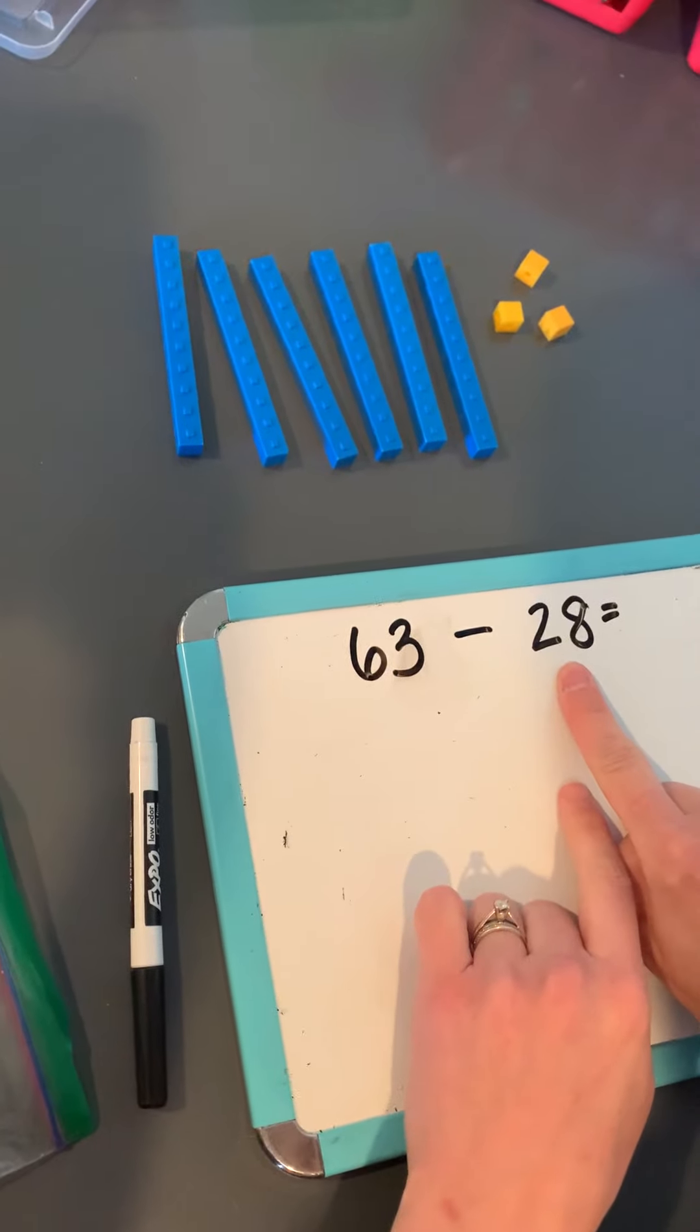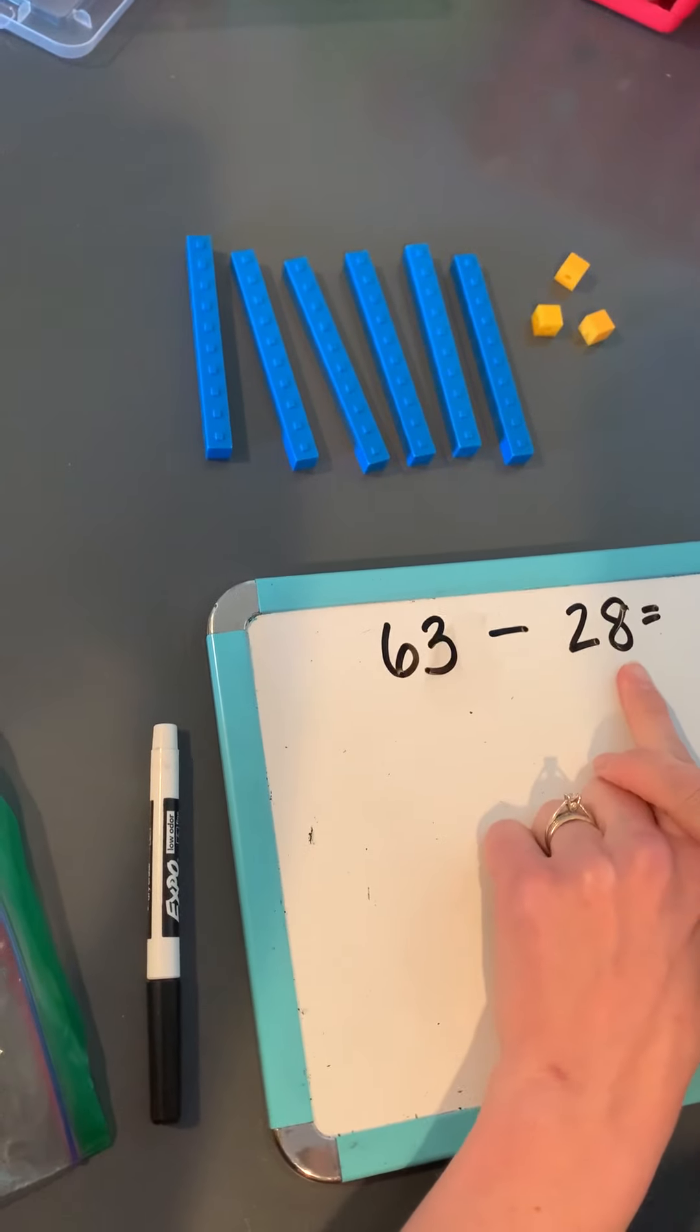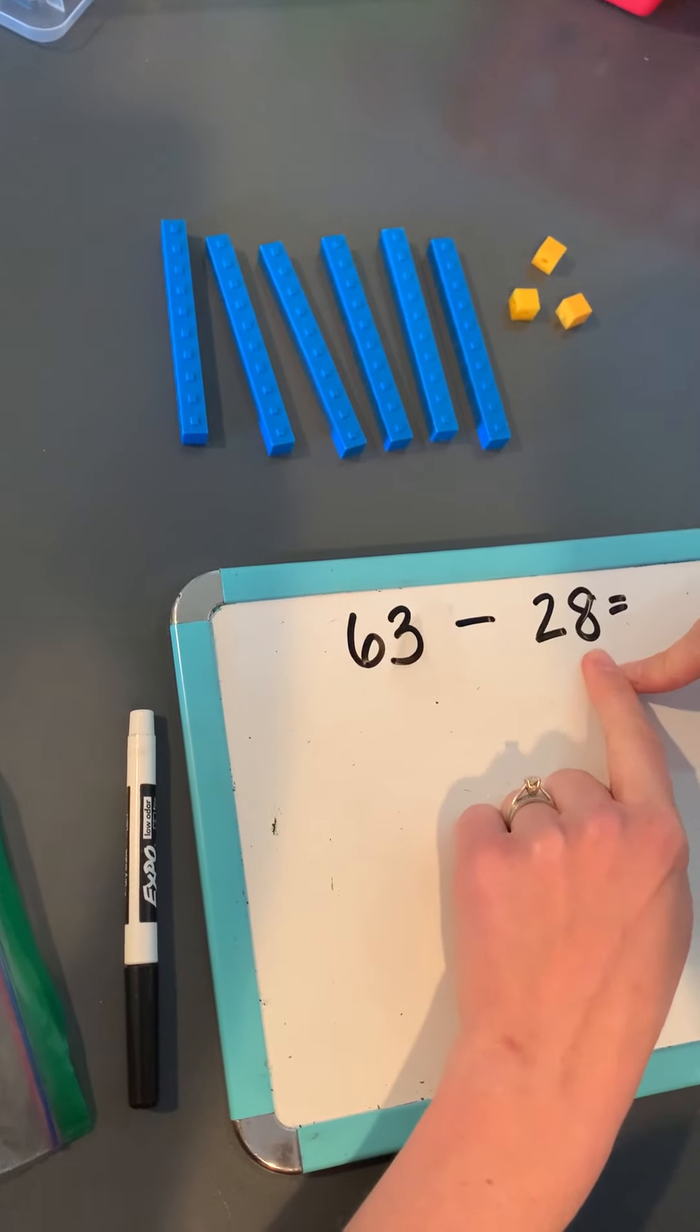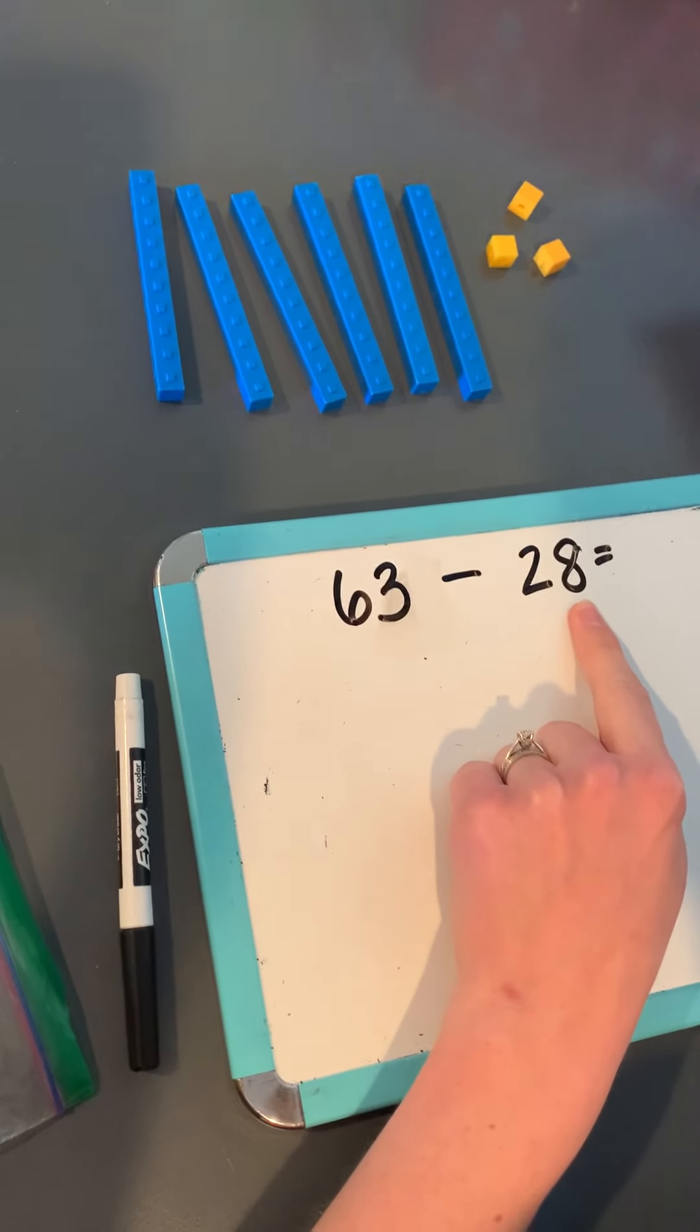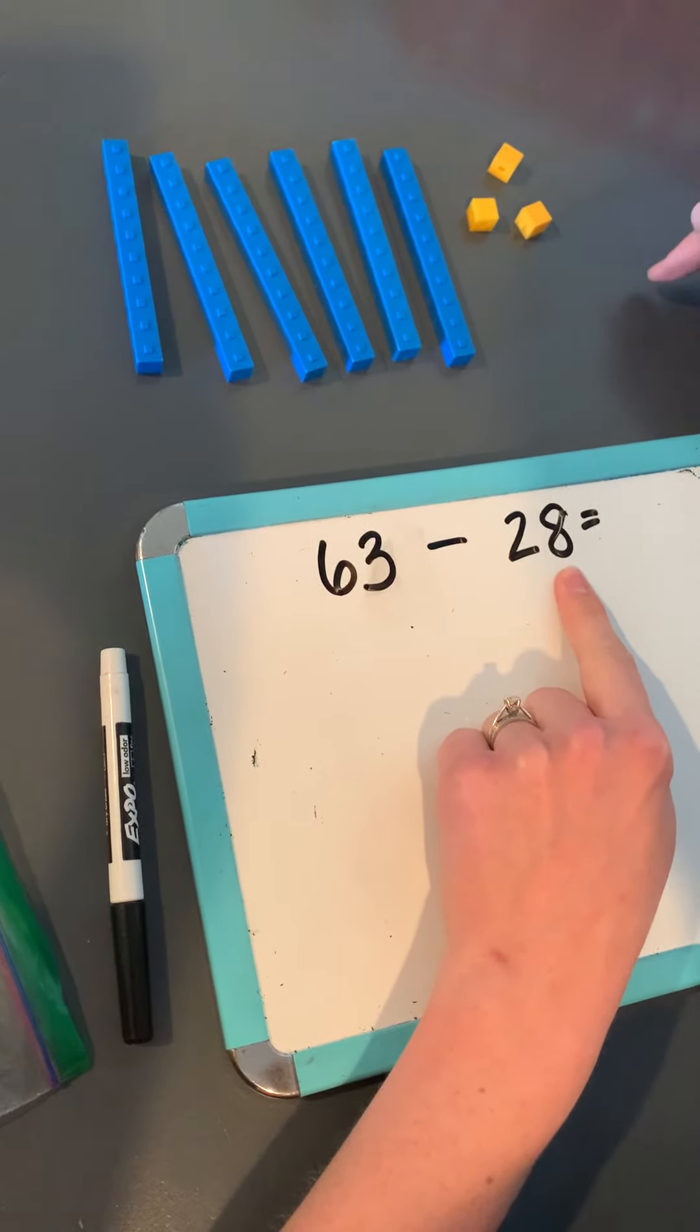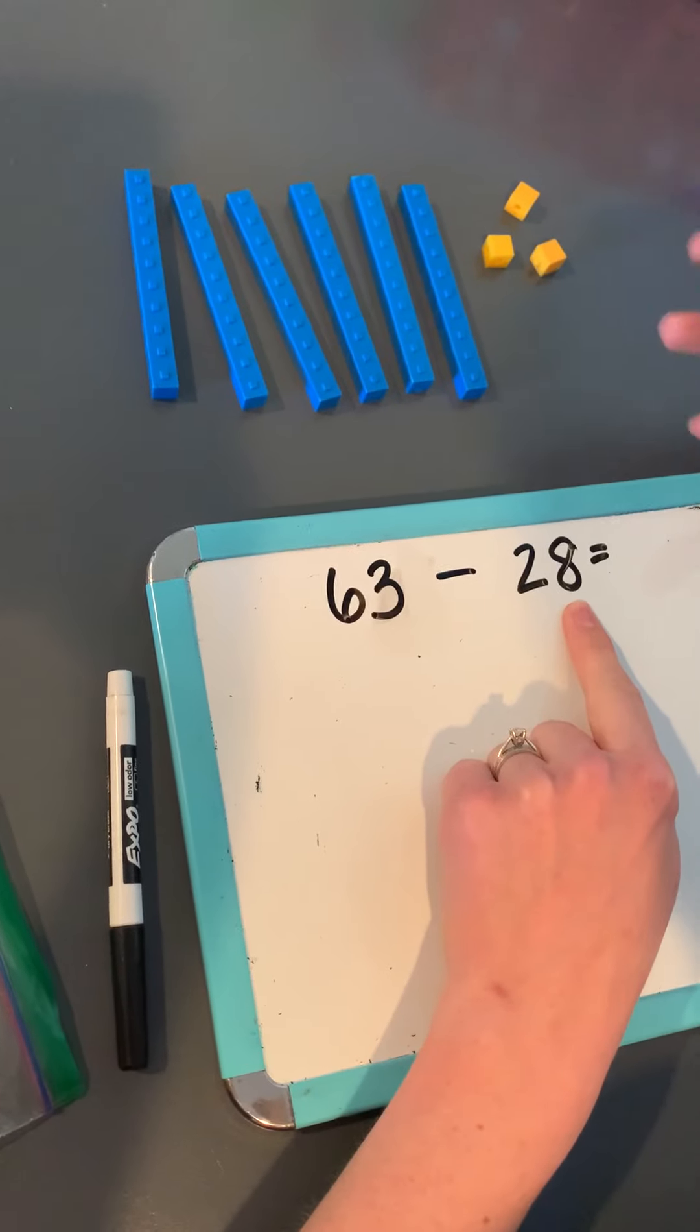Now I'm going to subtract 28. So I always start with my ones. I want to take away eight ones. I only have three ones so I actually can't do it. This is where regrouping comes in. I need more ones so I can take eight away.